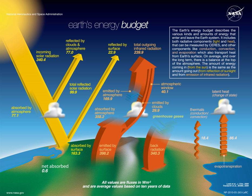Received radiation is unevenly distributed over the planet, because the Sun heats equatorial regions more than polar regions. The atmosphere and ocean work nonstop to even out solar heating imbalances through evaporation of surface water, convection, rainfall, winds, and ocean circulation.